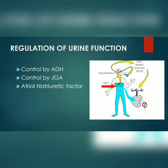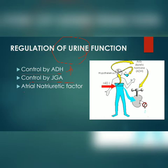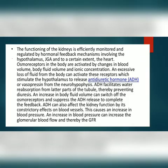Now we will study the regulation of kidney function and urine formation. This regulation of the urine formation process is under the control of ADH, it is controlled by the JGA, and it is controlled by the atrial natriuretic factor. We will understand each one by one.